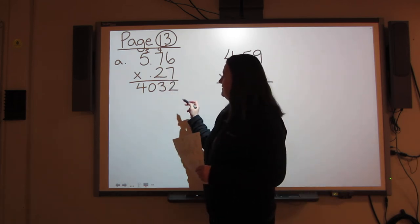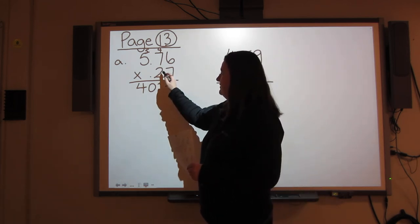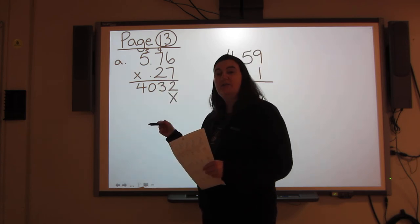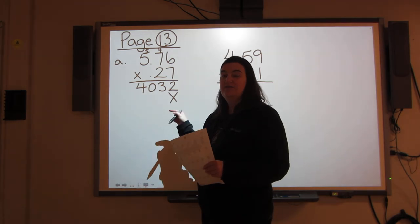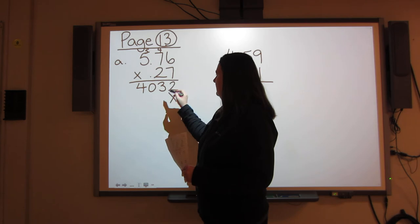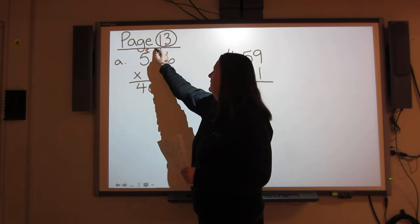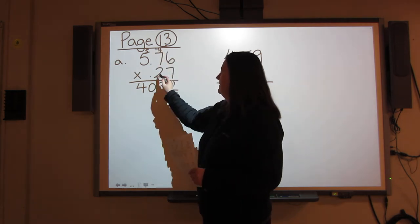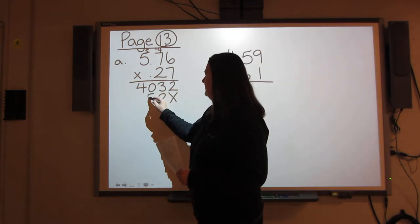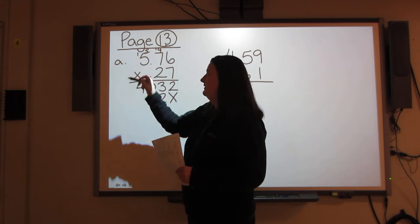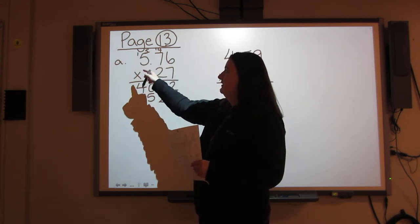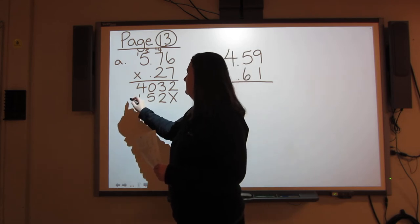Now I move on to the 2. All of my answers for the 2 need to start directly under the 2, so I have to make sure I put an X to leave that space blank. 2 times 6 is 12. Carry the 1. 2 times 7 is 14, plus the 1 that I carry is 15. Carry your 1. 2 times 5 is 10, plus the 1 that I carry is 11.